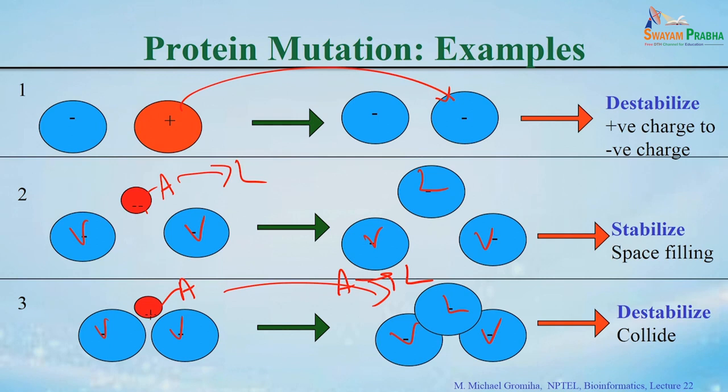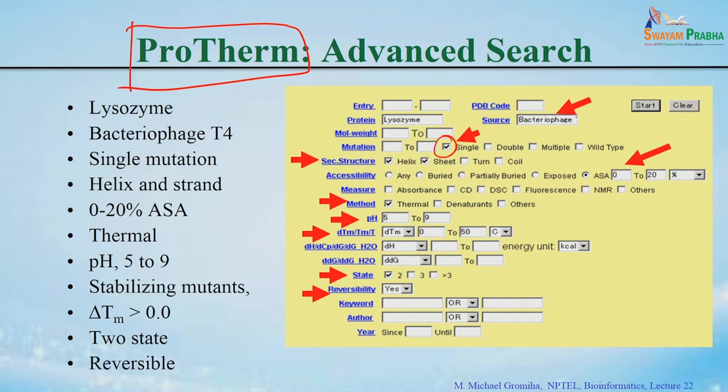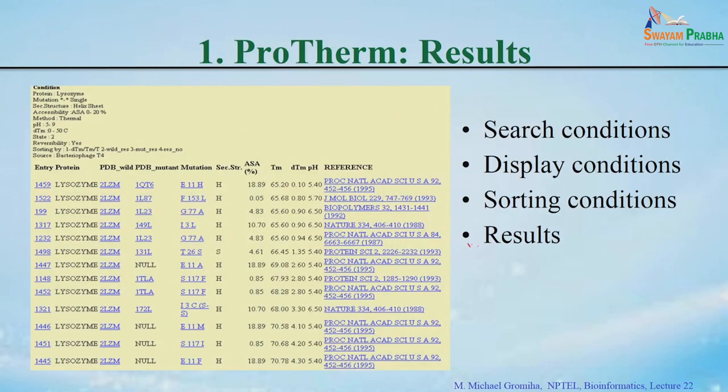So stability of a protein upon mutation depends on the location, which residues you mutate, and where you mutate. To understand the factors which influence stability, we use the ProTherm database. ProTherm contains more than 25,000 entries and more than 12,000 to 13,000 single mutants. You can search the database based on various options and download the data to understand the factors which can stabilize or destabilize a particular protein.